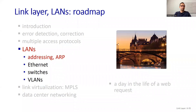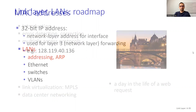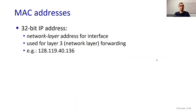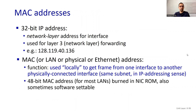We are moving on to local area networks. At the network layer, we had IP addresses — 32-bit IP addresses, which are network layer addresses for interfaces, used for layer 3 network layer forwarding. We represent them with four integers and talk about IP version 4. In MAC addresses, we will use hexadecimal notation.